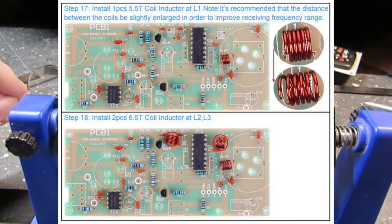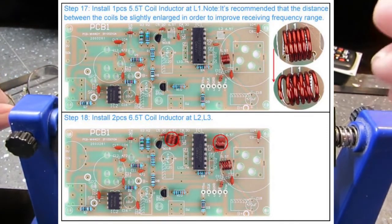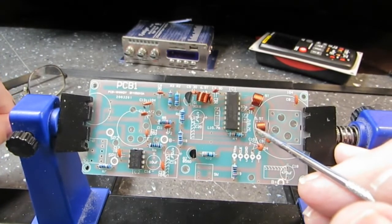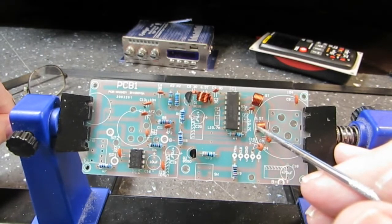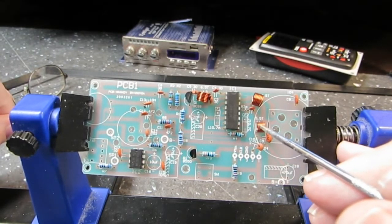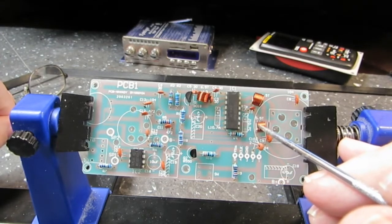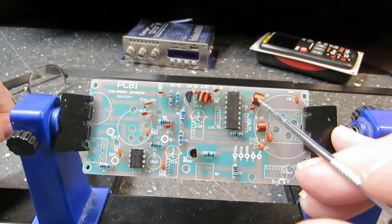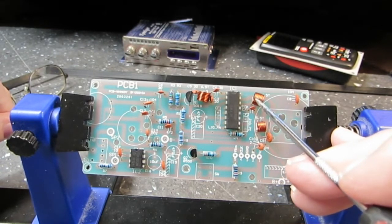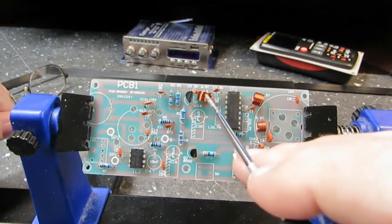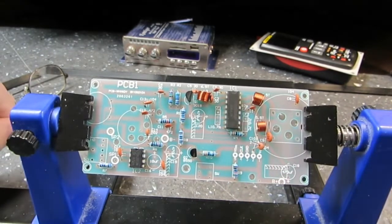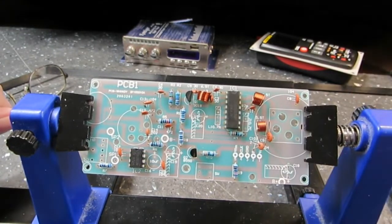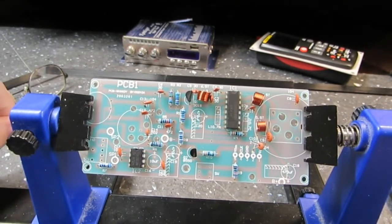I've got step 17 and 18 done now. I have step 17, which was the 5.5 turn coil here. And I have yet to, it says in a direction you need to spread the coils apart a little bit. And it shows a picture of it. And I'm gonna do that. But I haven't done it as of yet. The other ones, the 6.5 turns are installed here and here.